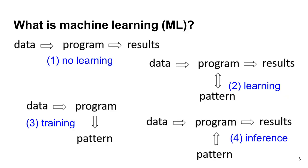When we start learning computer programming, the programs usually follow this pattern: the program takes some input data and produces the output. The programs do not get better even if we execute the programs again and again. This is a scenario when there is no learning. In the second case, the programs produce output but also discover patterns in the input data. In this case, we can say that the programs are learning some things from the data.